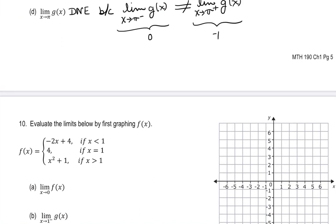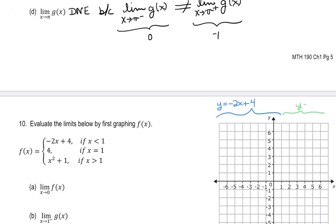We're going to look at more examples of piecewise functions — starting with a line and a parabola. For values less than 1, we display y = -2x + 4. For values greater than 1, we display y = x² + 1. At exactly x = 1, the function is actually defined, and the y-coordinate exists at 4.